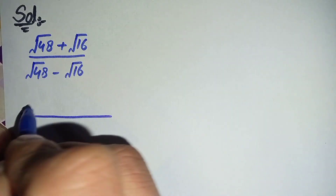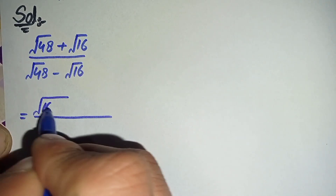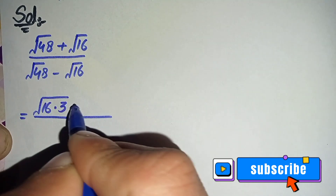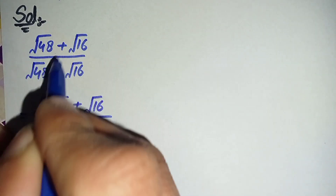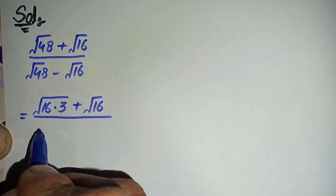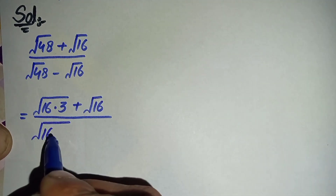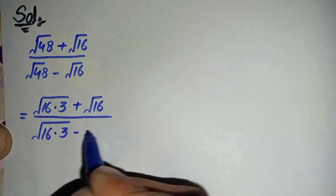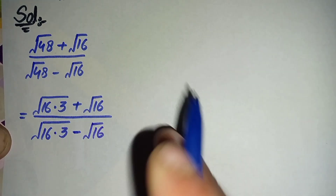So this equation will become: we can write 48 as square root of 16 times 3, plus square root of 16, divided by square root of 16 times 3, minus square root of 16.